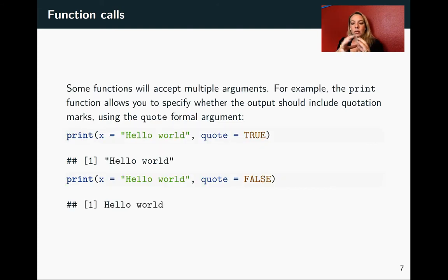There are also cases where functions will have multiple arguments that you can fill out. The general structure for doing this is to put each set of the formal argument and the named argument and separate those by commas. Here we're adding to hello world this option for quote, and if we leave that to true, which is the default, then it prints it out with quotation marks around it. But if we want to change that behavior, we can set quote equals false, and now it'll be printed out without quotation marks.